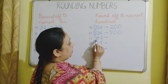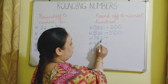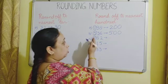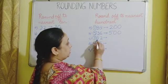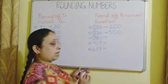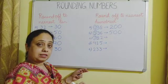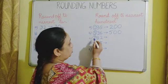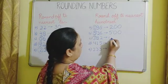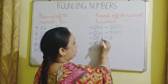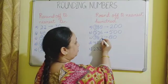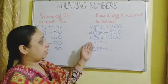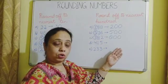Next is 782. Find the number to round off, then look to the right — that is the 10's place. We have the digit 8, and this 8 is more than 5. So we will add 1 to 7. 7 plus 1 will be 8. In place of 8 we write 0, and in place of 2 we write 0. Therefore, 782 is rounded off to 800.